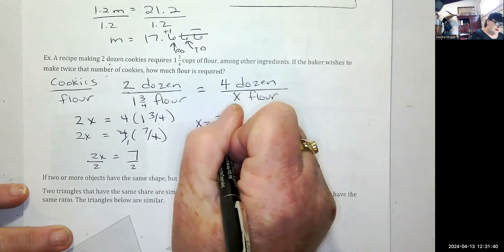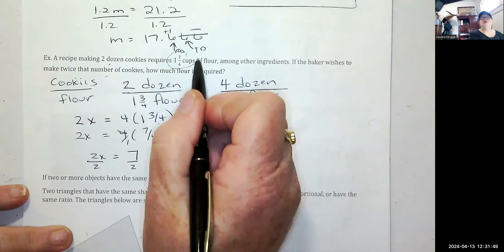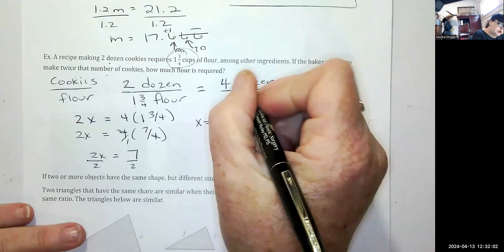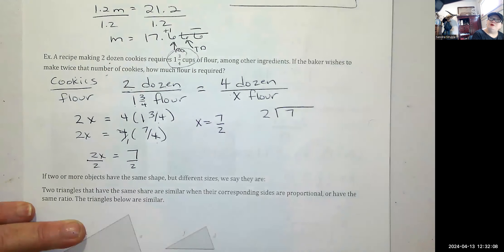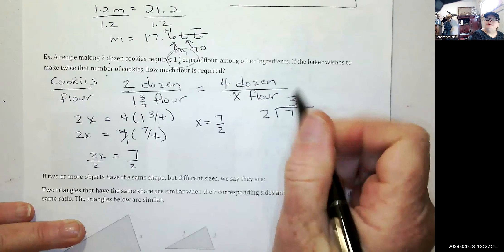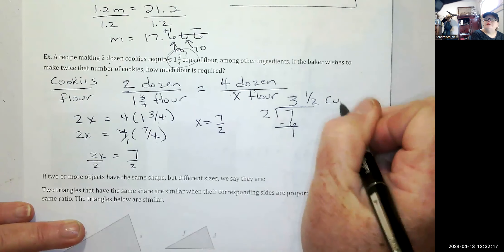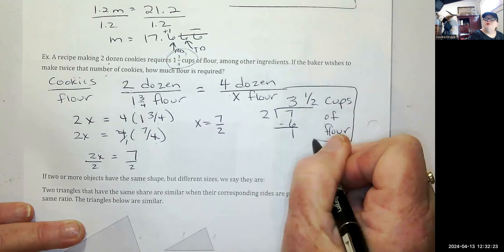This is 2X is equal to seven halves. But that doesn't make sense. We need to know how many cups of flour that is. So we're going to have to change that to a mixed number. Two into seven, three times two is six, you're left with one, so that's three and one half cups of flour is what we need.